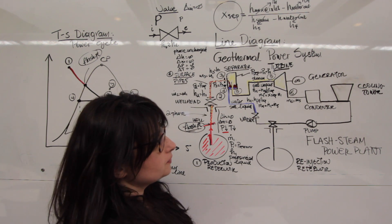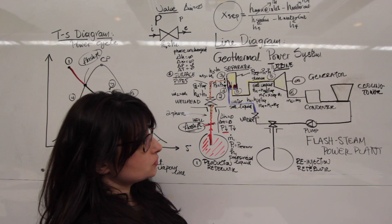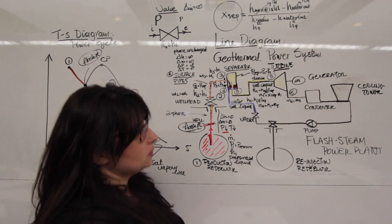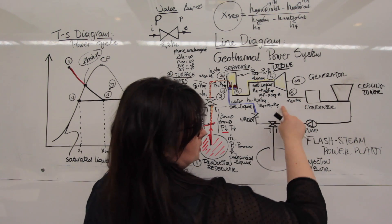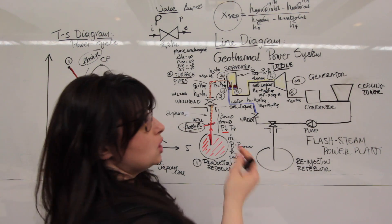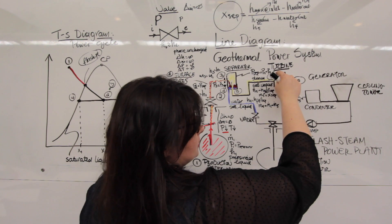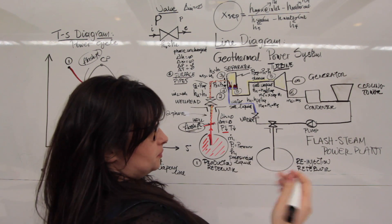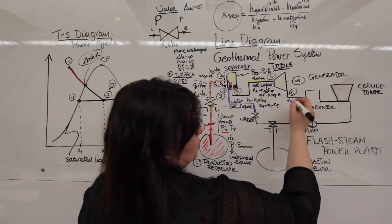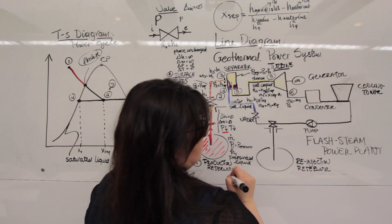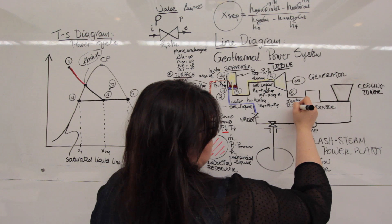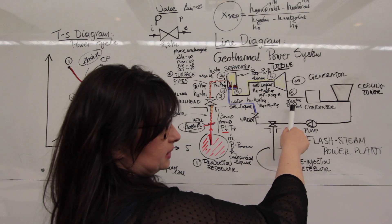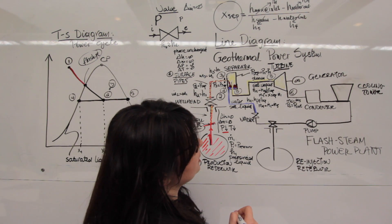The pressure at the turbine outlet is also set as a design condition, such as the pressure that we have for the separator, so it will be known to you. In the example we were talking about in the lab, it was at 0.1, while the pressure at the inlet — because it was defined by the separator — was equal to the separator pressure, which was at 7. So P6 is equal to P turbine outlet, and it's known. For the example, it was 0.1 bar absolute.